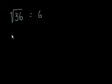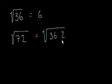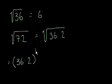Now what if I asked you what the square root of 72 is? Well, we know that 72 is 36 times 2. So let's write that: the square root of 72 is the same thing as the square root of 36 times 2. We just rewrote 72 as 36 times 2. And the square root, if you remember from level 3 exponents, is the same thing as something to the 1/2 power. So this is the same thing as 36 times 2 to the 1/2 power.